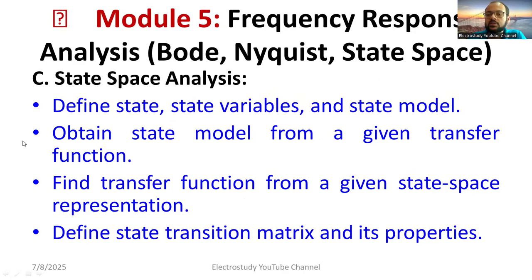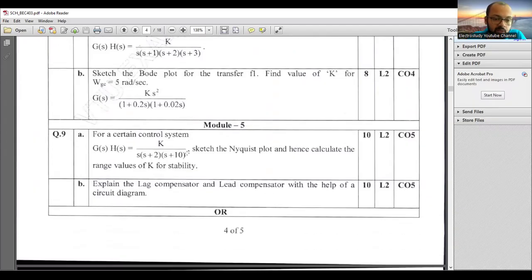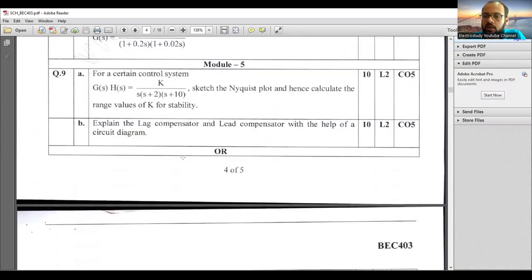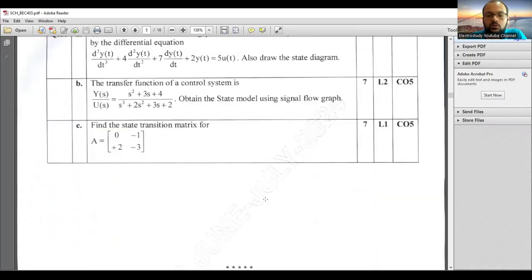An electrical circuit may be given for state space modeling; find the transfer function from the given state space representation. Define the state transition matrix and its properties. In the question paper, a transfer function will be given for Nyquist or Bode plot. Theory questions may include lag and lead compensators — covered in the lab manual. A video on state transition matrix is available in the description box.